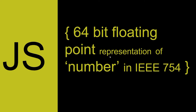Hello everyone, today we are going to discuss 64-bit floating point representation of numbers in the IEEE 754 standard. We have discussed about the number data type in our previous two sessions and mentioned this representation a few times, so we are going to deep dive and see how JavaScript internally converts a number to 64-bit floating point representation in IEEE 754 standard. Let's get started.